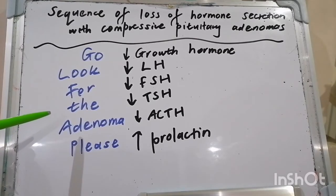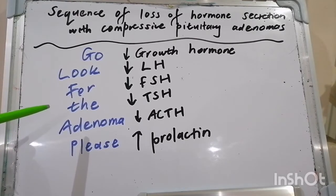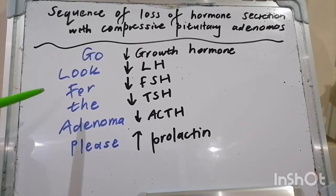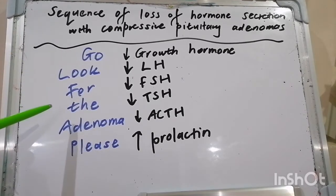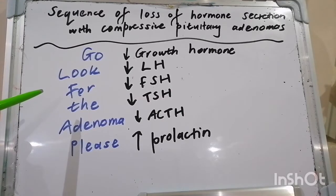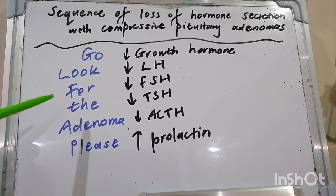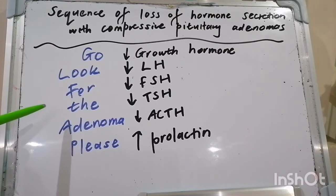Diminished ACTH leads to diminished cortisol — we'll cover that in another video. Cortisol excess gives Cushing syndrome; cortisol deficiency gives adrenal insufficiency. Thyroid hormone deficiency manifests with signs and symptoms of hypothyroidism, but it will be secondary hypothyroidism — in this case TSH is down, together with T3 and T4, which are also down.